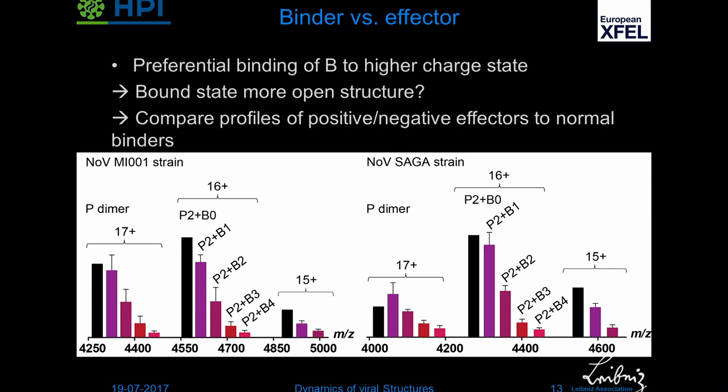We're now testing that with negative effectors, which are human milk oligosaccharides. If you plot this nicely you get a certain trend for the B antigen, but the Gb4, which we hope to have as a negative control, gives a flat line. We don't yet know whether the milk oligosaccharides do the opposite thing — that would be nice of course.